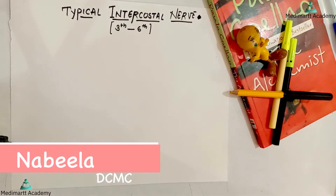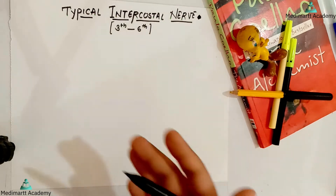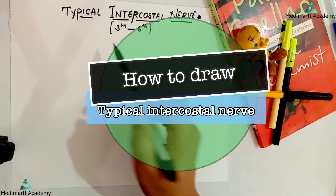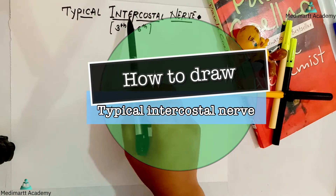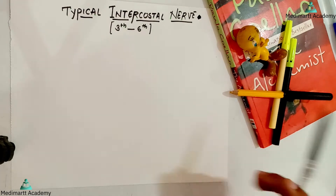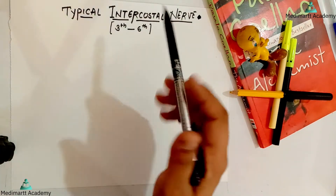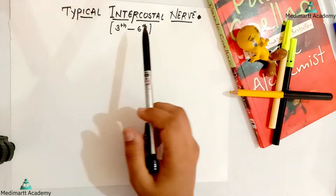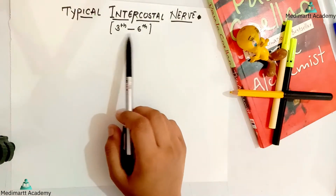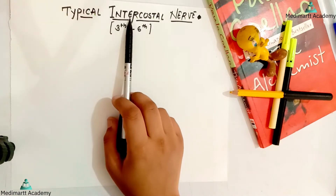I'm Nabila from Dutch Community Medical College. In today's video I will be telling you about an easy trick on how to draw the diagram for the typical intercostal nerve. In total there are 11 intercostal nerves on each side, out of which the 3rd to 6th intercostal nerve is the typical intercostal nerve.